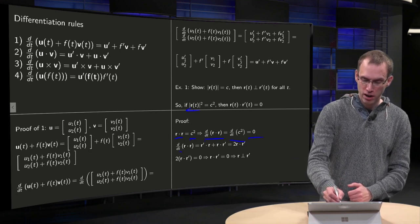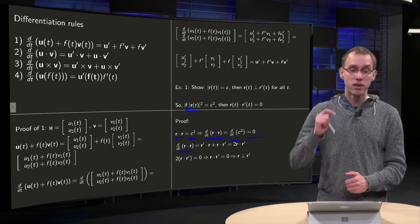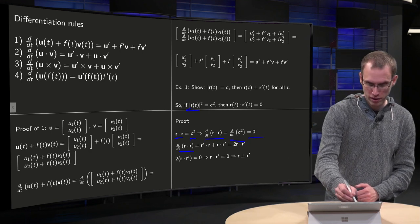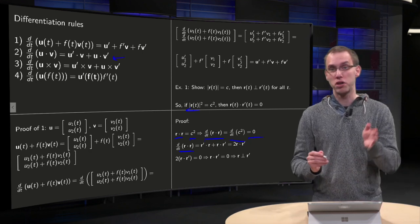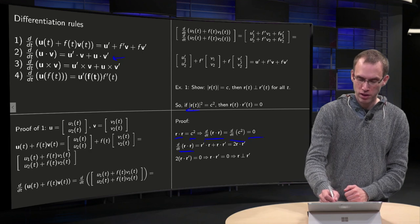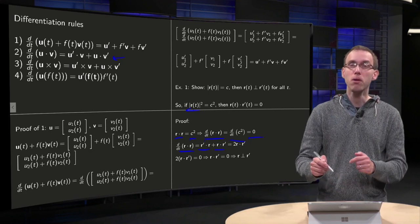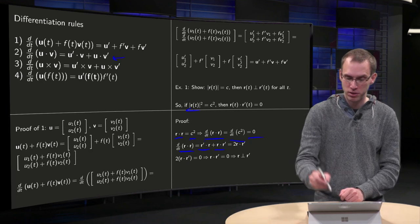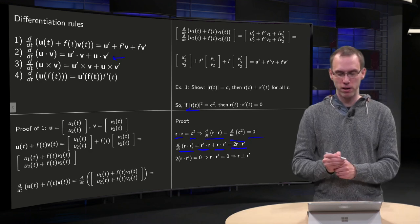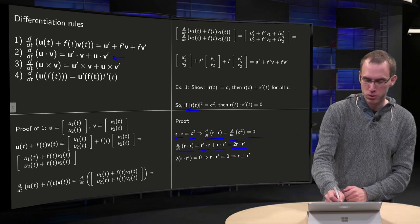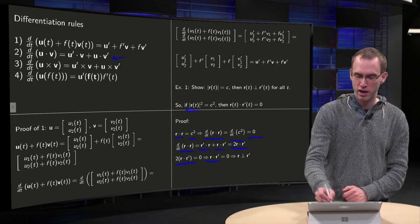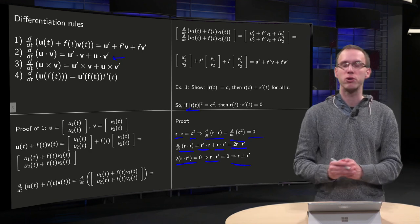So we get r prime dot r plus r dot r prime. The inner product is symmetric, so that yields 2 r dot r prime. So 2 r dot r prime equals zero, so r dot r prime equals zero. So r is orthogonal to r prime.